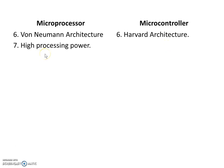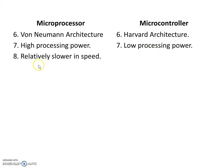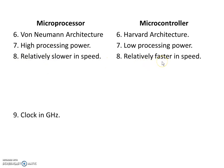There is high processing power in microprocessors and low processing power in microcontrollers. Microprocessors are slower in speed and microcontrollers are faster in speed. Slower in speed because all components are connected externally via buses, so the microprocessor has to send commands to all components. Therefore it becomes slower, while microcontrollers are faster because all components are on chip.